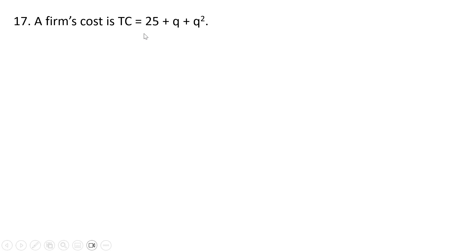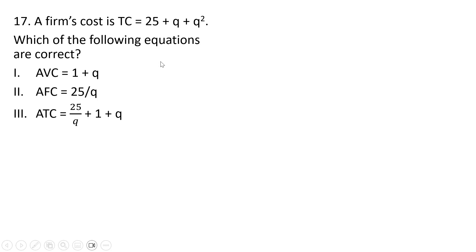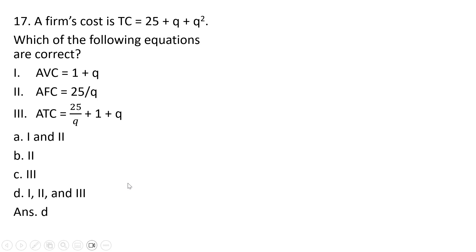Question 17. A firm's total cost is given by this equation. Which of the following equations are correct? Average variable cost is 1 plus q — that is correct. The total variable cost is q plus q squared, and dividing that through by q gives us average variable cost. Average fixed cost is 25 divided by q — the total fixed cost is just a constant of 25, and dividing by q gives average fixed cost. Statement 3 is also correct: average total cost is average fixed cost plus average variable cost. Alternatively, you can divide the total cost equation completely through by q to get average total cost. The correct answer is D — all statements are correct.